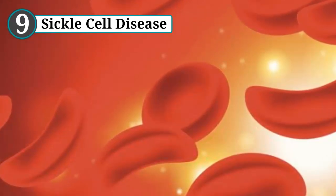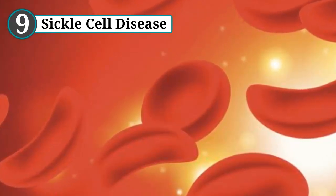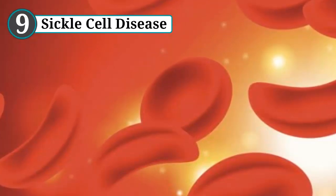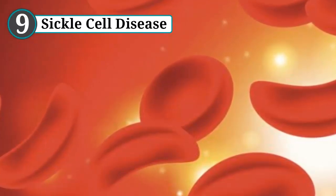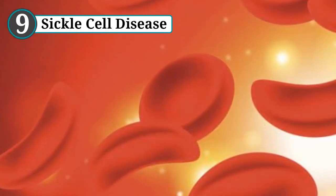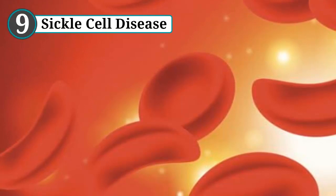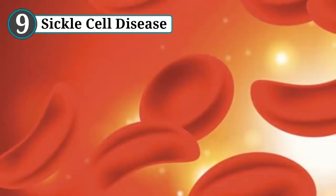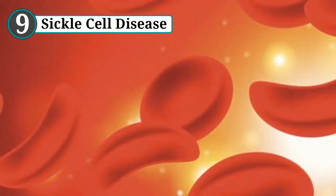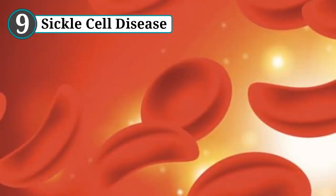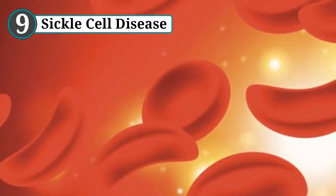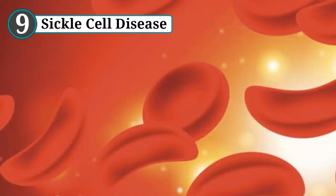The cause of this disorder — a genetic change — is meant to protect against malaria. As a result, those who suffer from sickle cell disease overwhelmingly come from tropical areas or places where malaria is common. Basically, sufferers have abnormally shaped hemoglobin within their red blood cells. These abnormalities can cause painful blockages, aka pain crises, which prevent oxygen from reaching various parts of the body.